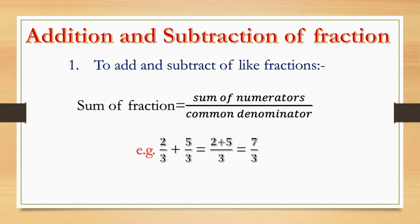Here is an example: two by three plus five by three. These are like fractions — the denominator is the same (three). So write the common denominator three once, and add the numerators: two plus five equals seven. The answer is seven by three.